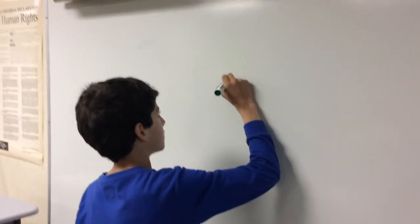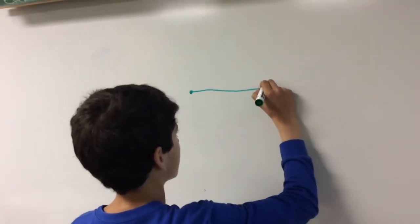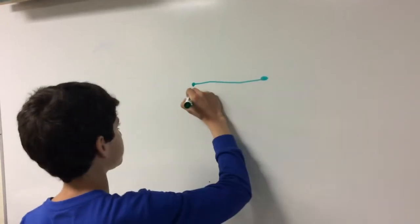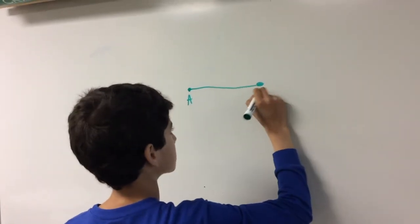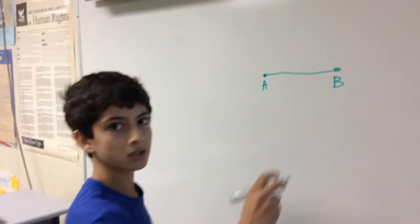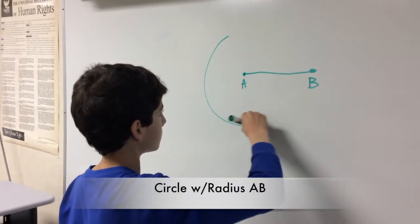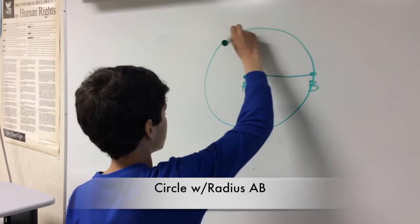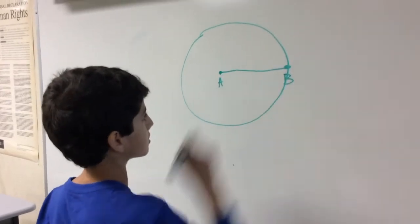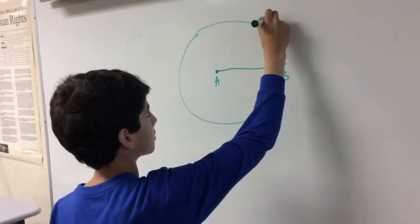Let's start off with line segment AB. And I'm going to draw a circle around the point A. This is the radius of the circle. And now I'm going to draw a circle around B.